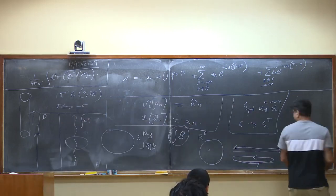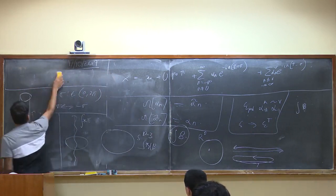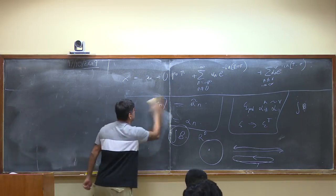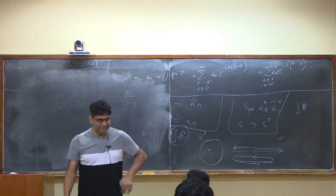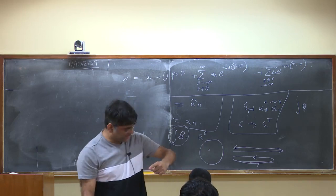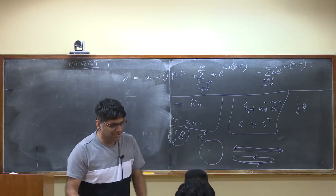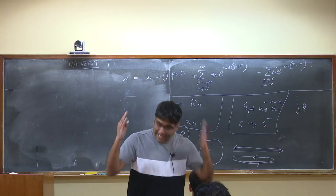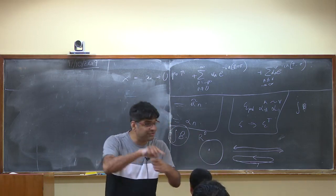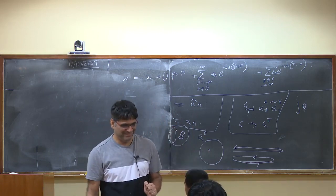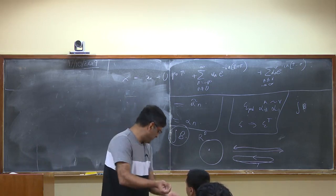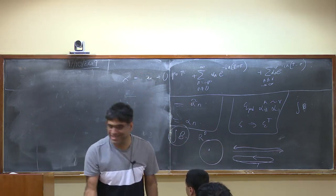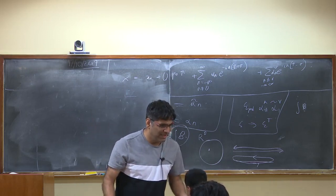I brought up the unoriented theory because I wanted to discuss the torus partition function. In Type I theory, the string does not carry any charge — think of it as going a bit this way and a bit that way. In the oriented theory, a closed loop carries no net charge (like an electron-positron dipole), but a string winding a circle carries genuine charge; in the unoriented theory it carries no charge.